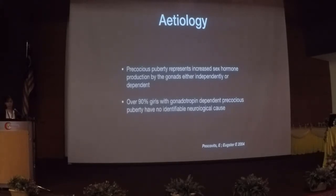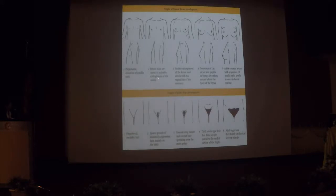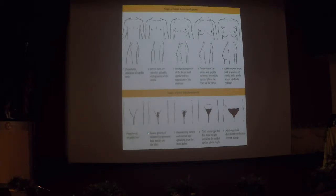Everyone is familiar with the Tanner chart. In girls, prepubertal is breast stage 1. When breast buds are noted or palpable, this is BH2. Further enlargement of the breast and areola is BH3, and stages 4 and 5 are the mature adult. When prepubertal, no pubic hair is expected. Around stage 2, there may be sparse or minimal pubic hair, which progresses as puberty progresses.